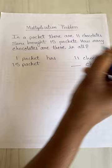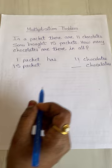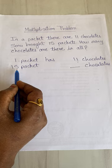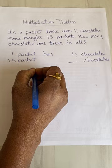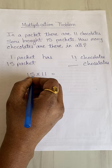We have a method: when 11 is given for one packet and we have to find out for 15 packets, it's a multiplication sum. So we have to multiply 15 by 11, and it becomes very easy.